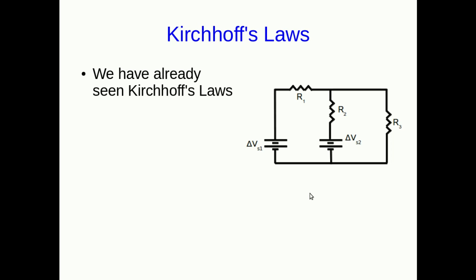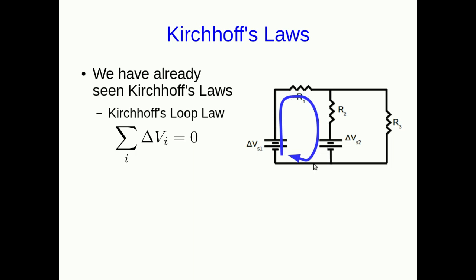There are two fundamental laws called Kirchhoff's laws which govern the way circuits operate, and in fact we've already seen both of them — we just haven't named them. The first is called Kirchhoff's loop law. It's a law about voltages: if you go in a circle, because potential is only a function of position, you must arrive back at the same potential you started at. So the sum of the voltage changes you go through in your path must be zero. This is also called Kirchhoff's voltage law.